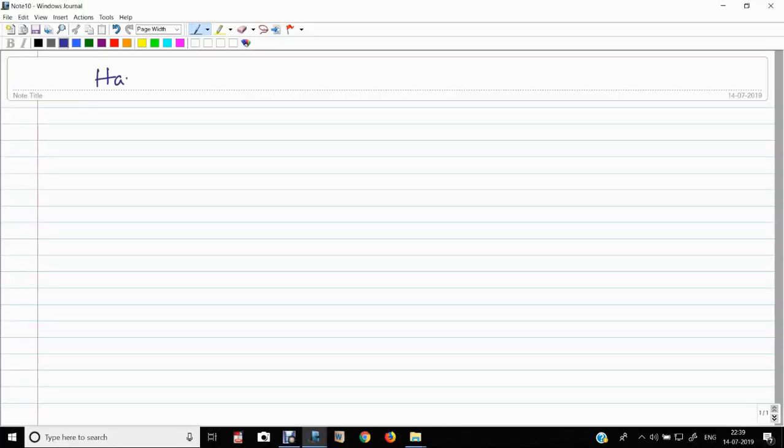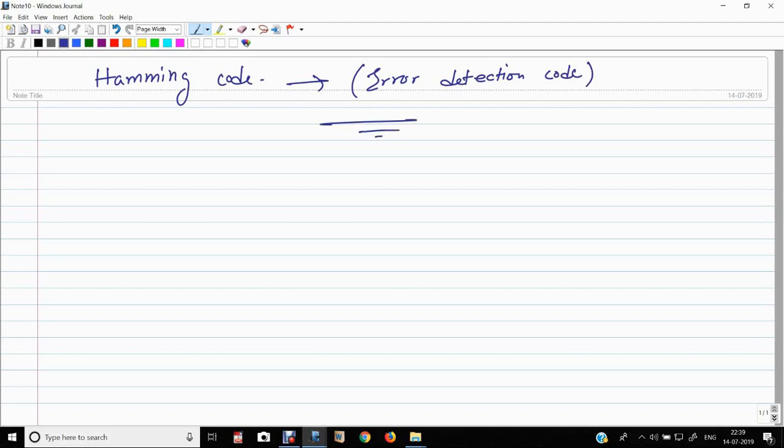Let's talk about Hamming code. This is nothing but error detection. So how we will detect error in binary digits? Suppose a binary number.